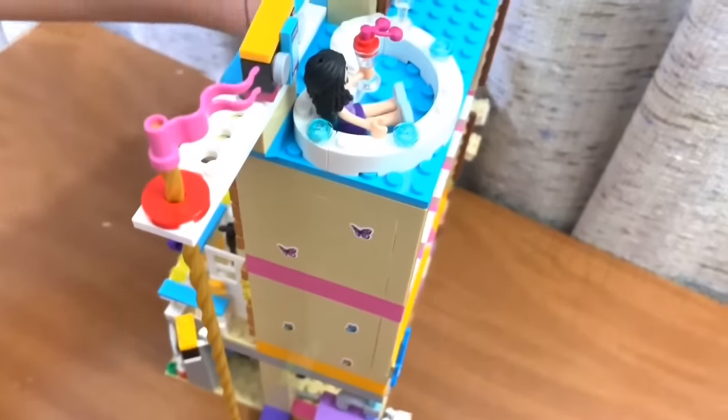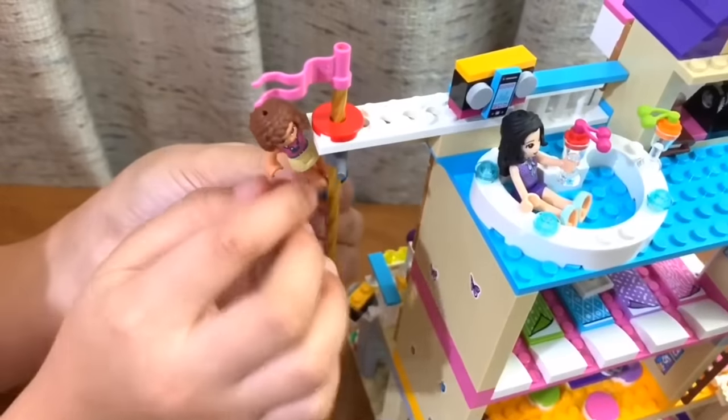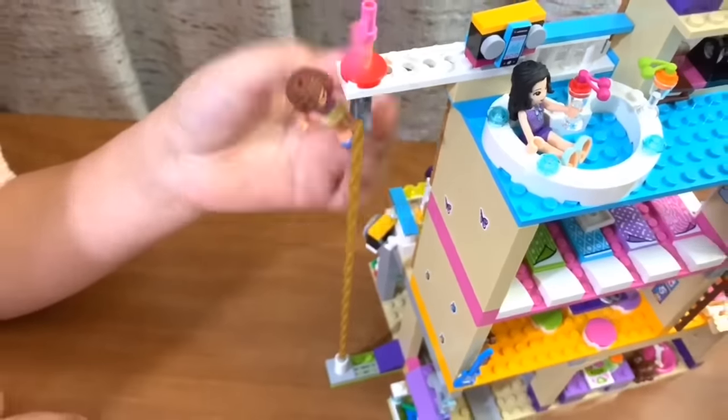Here we have the pole. Finally we can get to this. So we're going to use Olivia. Here we have the handle, so let's test the pole. Three, two, one. Woo!